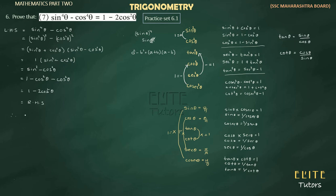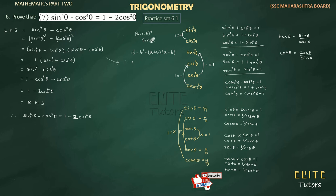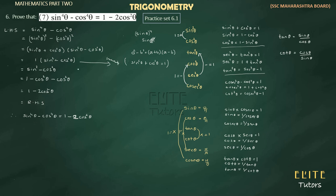Therefore, sine raised to 4 theta minus cos raised to 4 theta equals 1 minus 2 cos squared theta. One thing we should note: since sine squared theta plus cos squared theta equals 1, we substituted accordingly. This completes question 7. Now let's move on to question number 8.